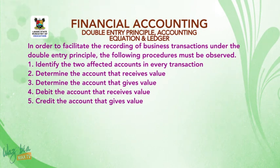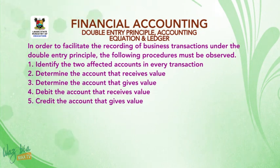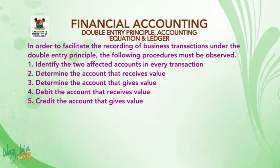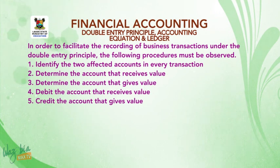Identify the two affected accounts in every transaction. Number two, determine the account that receives value. Number three, determine the account that gives value. Number four, debit the account that receives value. Number five, credit the account that gives value.